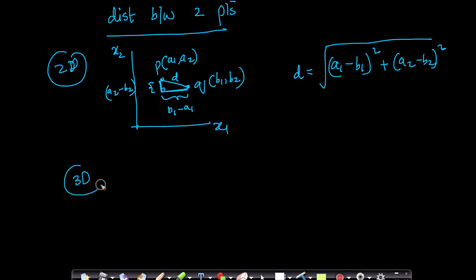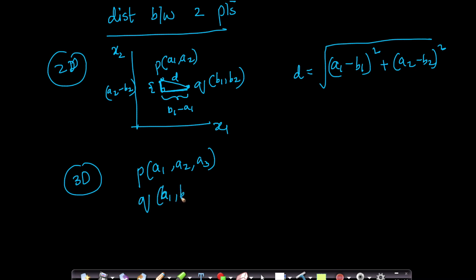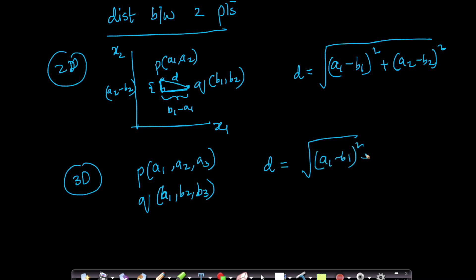Similarly in 3D, if you have two points p = (a1, a2, a3) and q = (b1, b2, b3), the distance between p and q is the square root of (a1 − b1)² + (a2 − b2)² + (a3 − b3)². Again, this can be proven using the Pythagorean theorem applied multiple times.